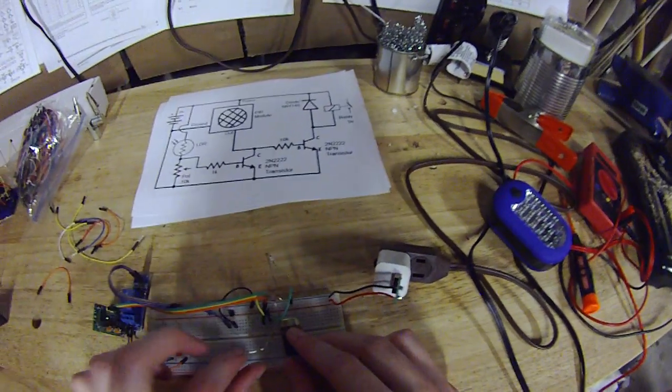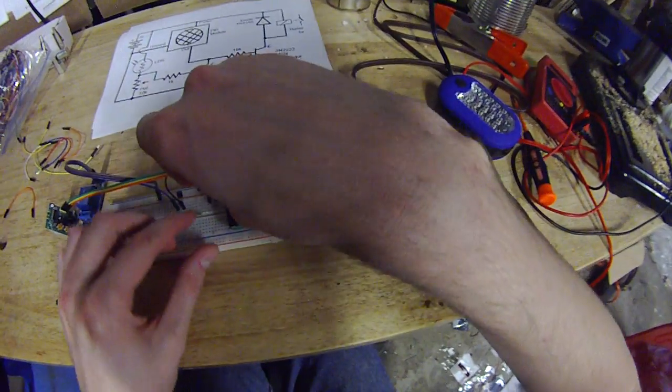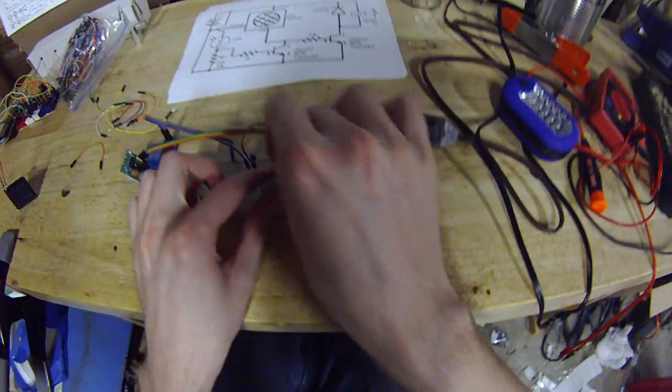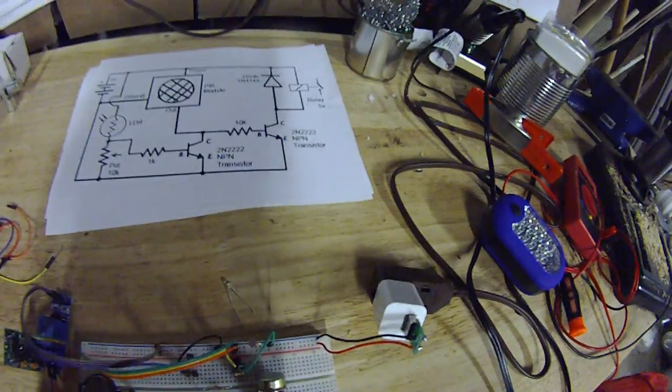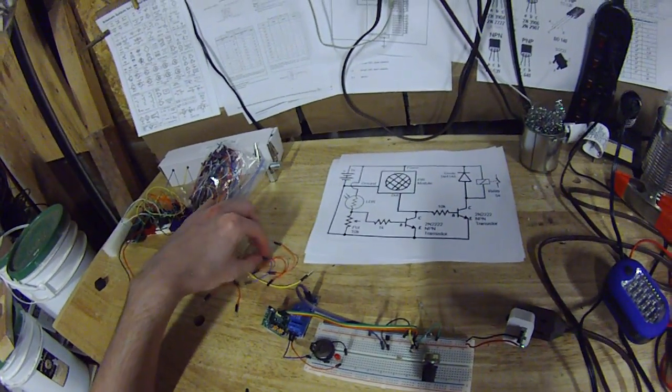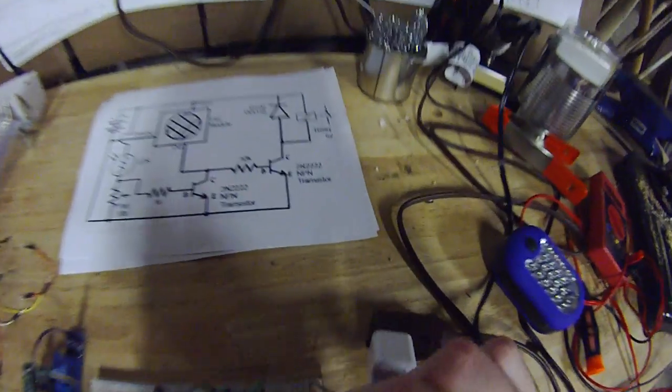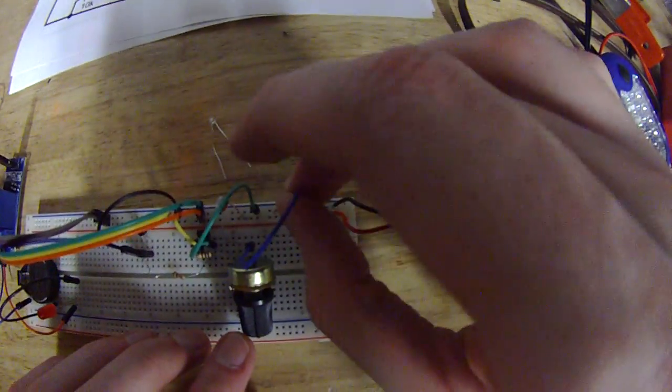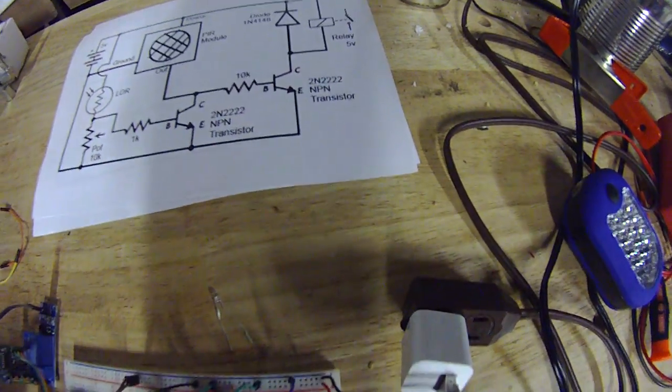There we go. And then that goes to the base leg on the second transistor. So that is hooked up there. And then I need a ground for my potentiometer. So the second pin in my potentiometer there goes to ground. And we're good.